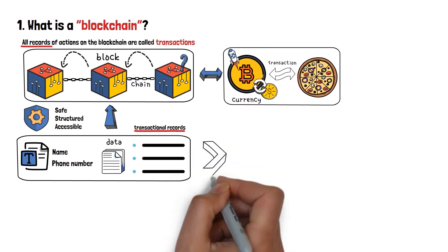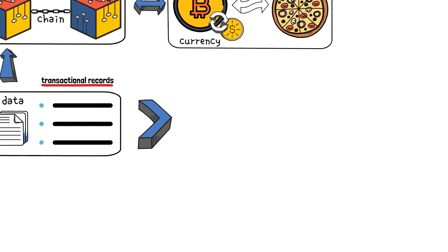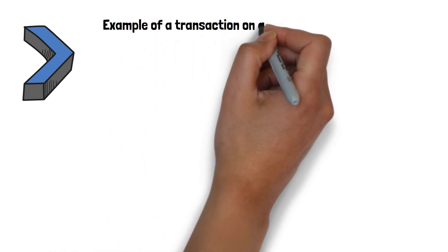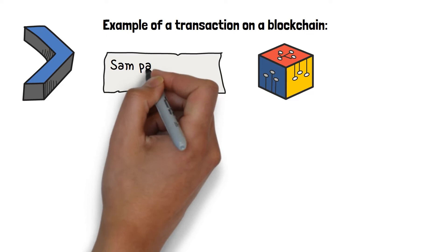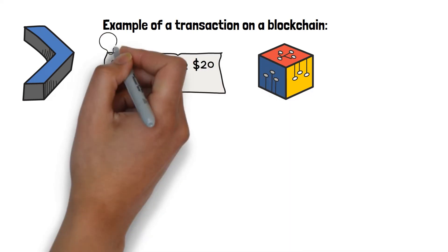Sounds cool, but what does that look like? Well, a typical transaction on a blockchain would look a little something like this. Sam paid Joe $20. Simple enough, right?